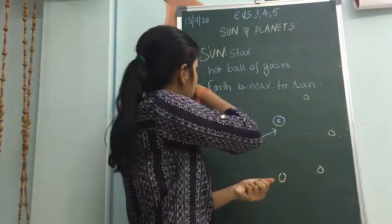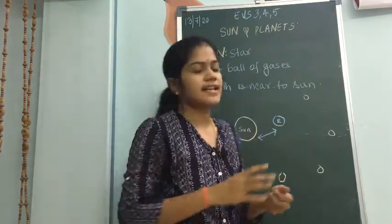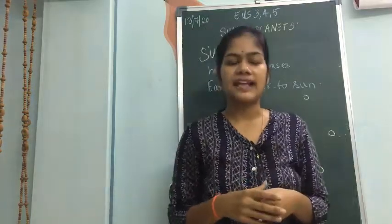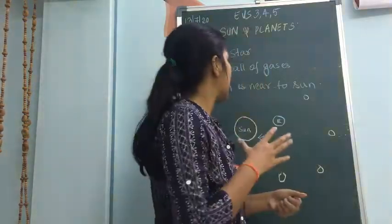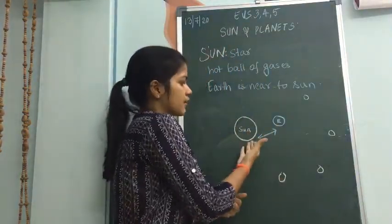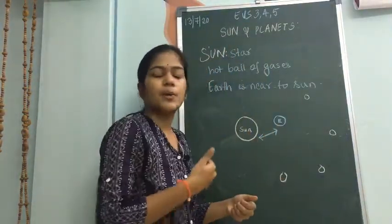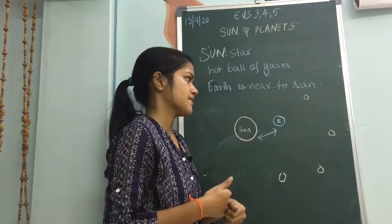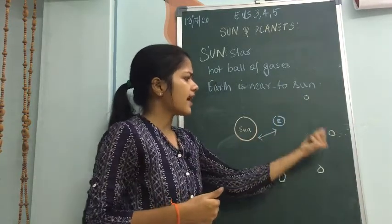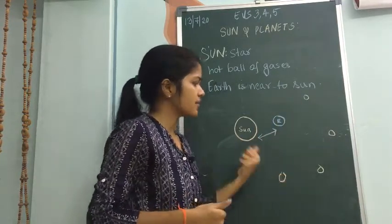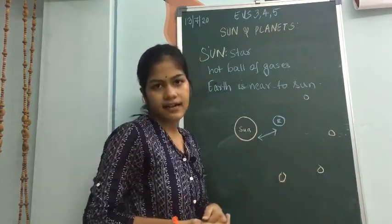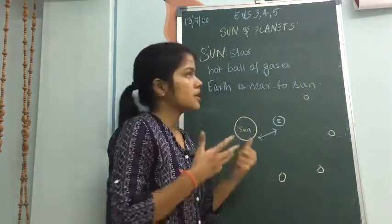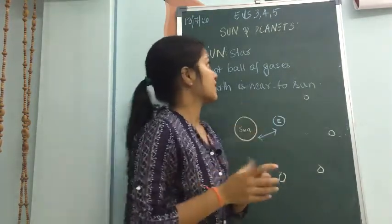The sun is also a star — a hot ball of gases — and the Earth is near to the sun, so that's why we get the heat and light from the sun. There are other stars which are bigger than the sun, but they are very far from the Earth.